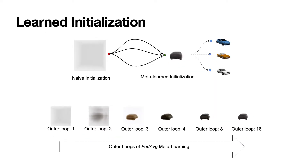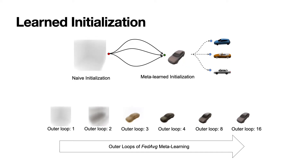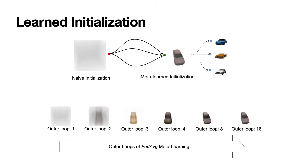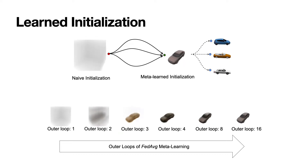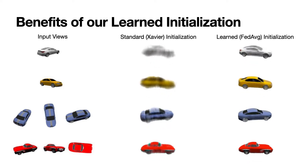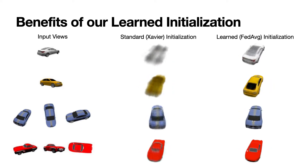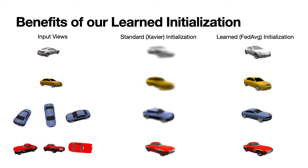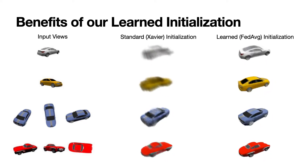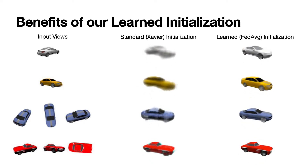3D object priors are incorporated into our framework via meta-learning. We use the popular federated averaging algorithm to approximate the meta-learning process of finding a better category-specific initialization of the object MLPs. As shown here, with each outer loop, the federated averaging finds better and more generalizable weights for initializing the individual object MLPs. This category-specific learned initialization allows us to reconstruct objects with a sparse and partial set of input views, and can even reconstruct cars with just one input view.